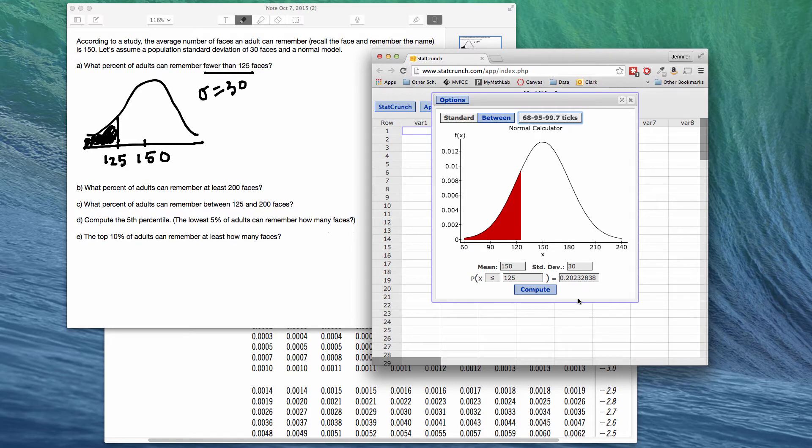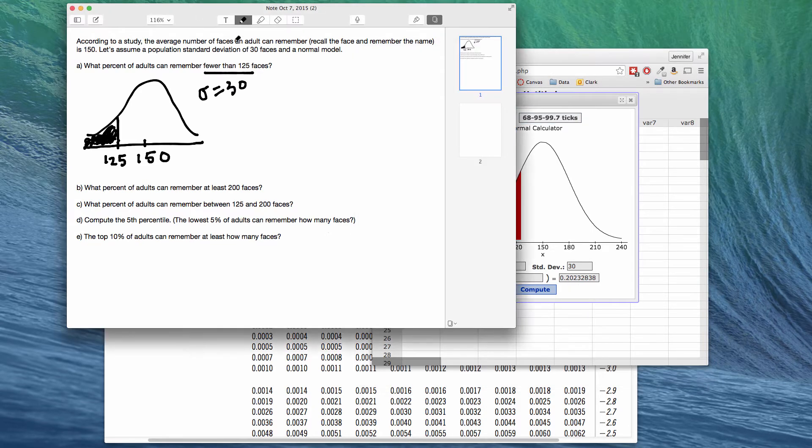So this is our answer, .2023. I'm going to go back over here to our other window, and what percent? 20.23%. And we usually go out to four decimal places, at least that's because the back of the book table uses four decimal places. But of course, read whatever you're typing your answer into and figure out how many decimal places are asked for.